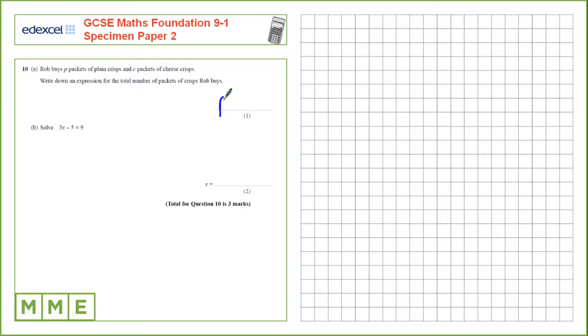So Rob buys p packets of plain crisps, that could be 4 or 5, and c packets of cheese crisps. We're adding those together, so that's p plus c.